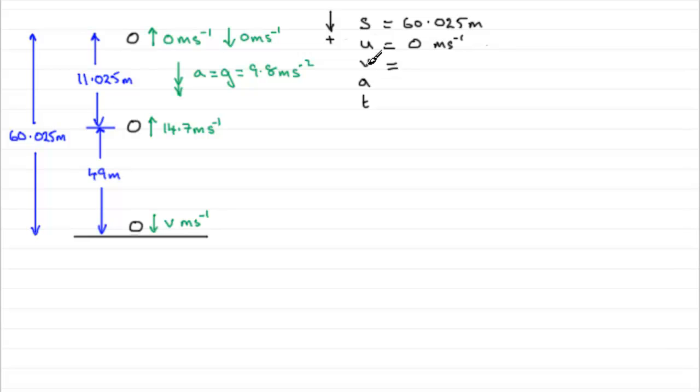V, well, V is what we're trying to find. A, well, A is going to be 9.8 and it is in the positive sense here. So this will be 9.8 metres per second per second. As for time, well, we're not interested in that, so we can ignore that.